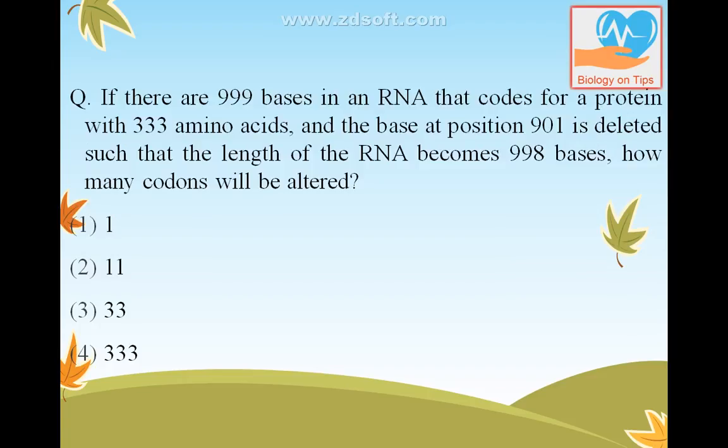If there are 999 bases in an RNA coding for a protein with 333 amino acids, and the base at position 901 is deleted such that the RNA becomes 998 bases, how many codons will be altered? If deletion occurs at the 901st position, the remaining 98 bases specifying 33 codons of amino acid will be altered. So the answer is 33.